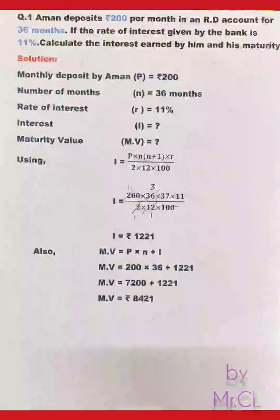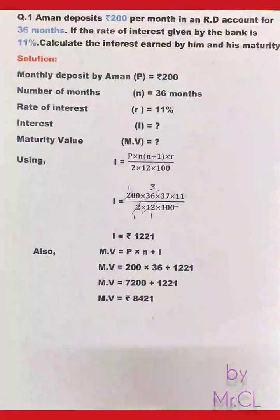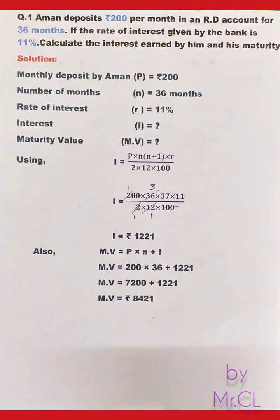Substituting values: I = 200 × 36 × 37 × 11 ÷ (2 × 12 × 100). After canceling zeros in the numerator and denominator, and simplifying 36÷12 and 2÷2, we get interest I = ₹1221.